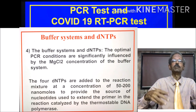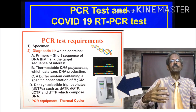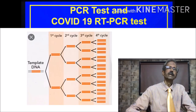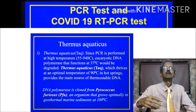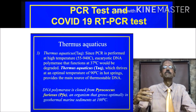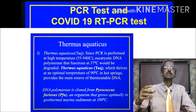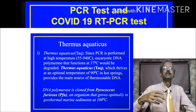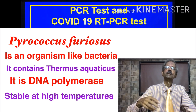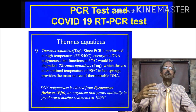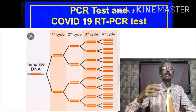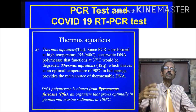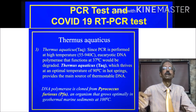You also require a thermocycler, which is used to form millions of copies of the target DNA. The most important enzyme is Thermus aquaticus DNA polymerase, cloned from Pyrococcus furiosus, an organism that grows optimally in geothermal marine sediment at 100 degrees temperature. This means the enzyme remains stable during the entire thermal cycler temperature range of 60 to 90 degrees, unlike human DNA polymerase, which denatures above 40 to 50 degrees.